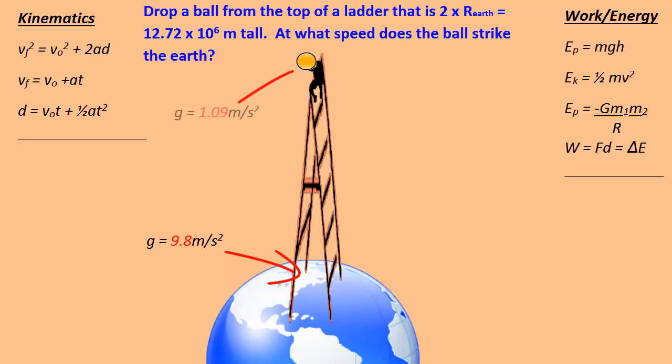Where the ball initiates, the acceleration due to gravity is only 1.09 meters per second squared. We know that g only remains at 9.8 while you're very close to the surface of the Earth. At these great distances, the value of the gravitational field strength drops off dramatically.